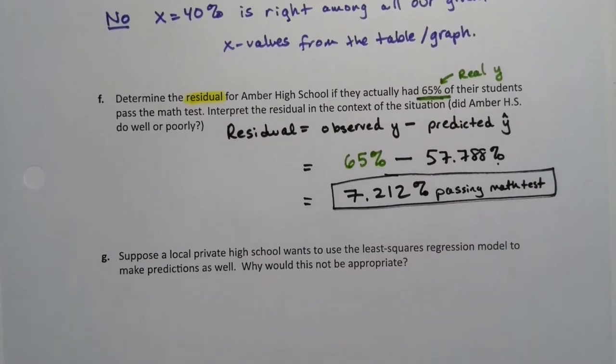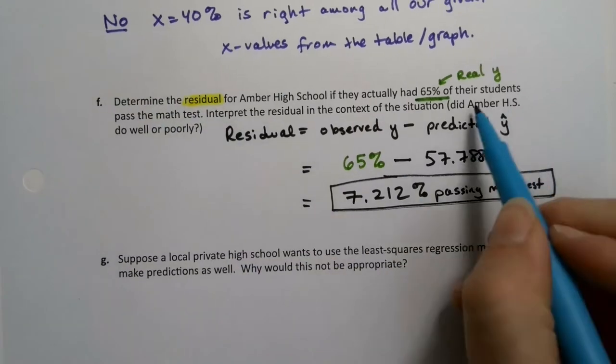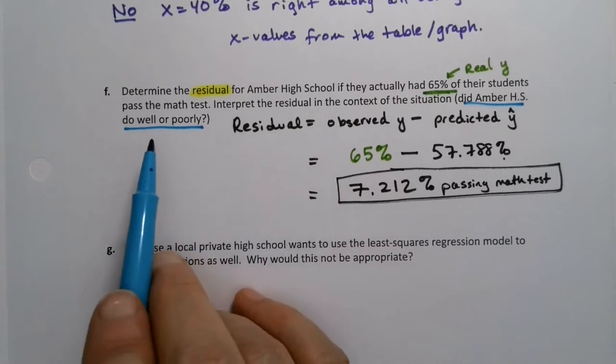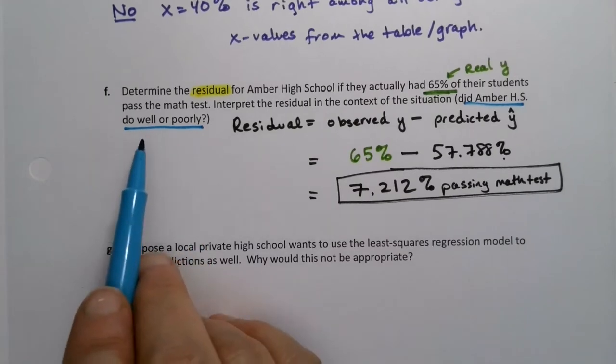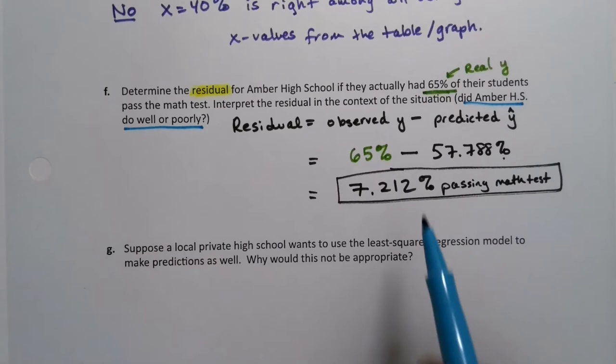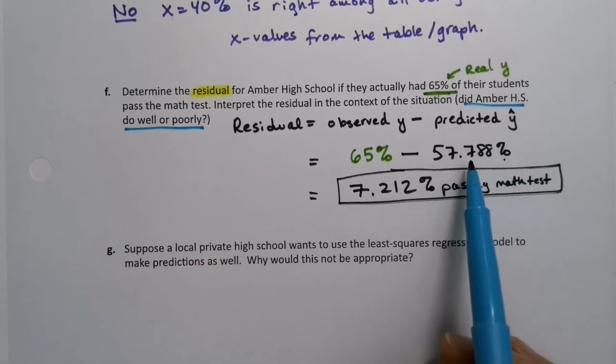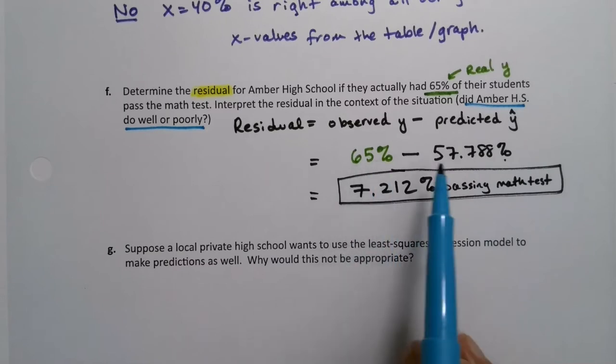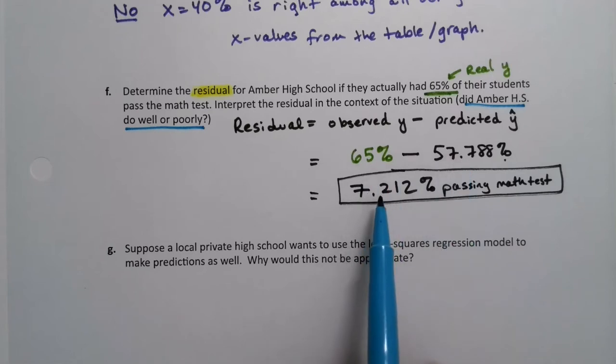Now what does that mean for Amber High School? How is Amber High School doing? Right, is it doing well or is it doing poorly? That's the next question. Always want to make sure we interpret it and find out what they're asking. Or answer what they're asking. So we expected, right, we predicted 57.788, but they have 65. So they're doing better than we expect. We expected only 57% to be passing that math test.